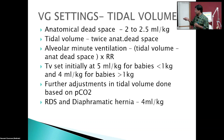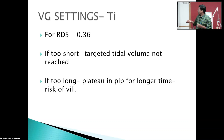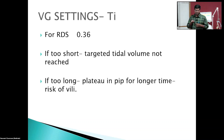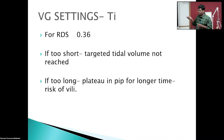For RDS and diaphragmatic hernia, 4 ml/kg tidal volume is sufficient. Ti for RDS should be set at three time constants — approximately 0.36 seconds. If Ti is too short, a plateau will not be achieved on the pressure curve and there will not be enough time to deliver the targeted tidal volume. If Ti is too long, there is prolonged higher inflation and a risk of air leak.